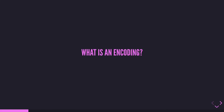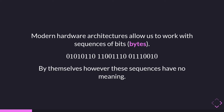We do this through an encoding. Modern hardware architectures allow us to work with sequences of bits called bytes — specifically one byte is a sequence of eight bits. Our architectures allow us to store, read, and work with bytes. However, the problem is that these bytes have no meaning by themselves; they are just sequences of zeros and ones.